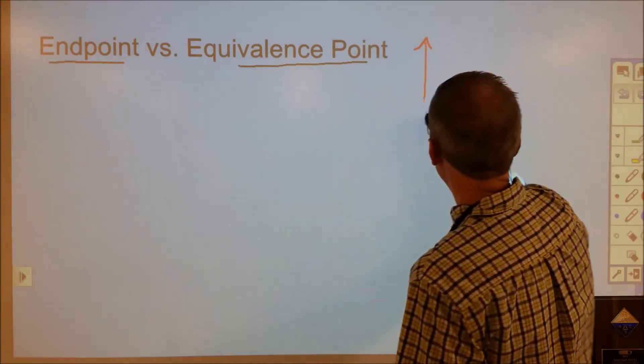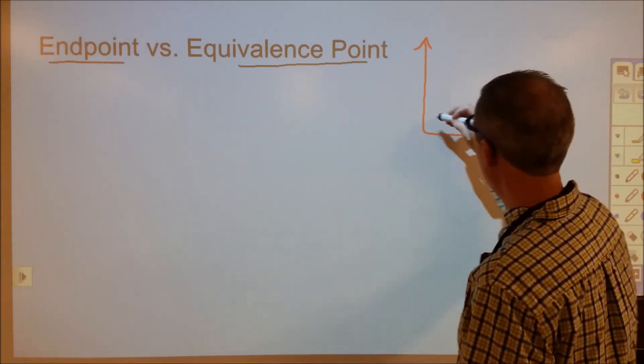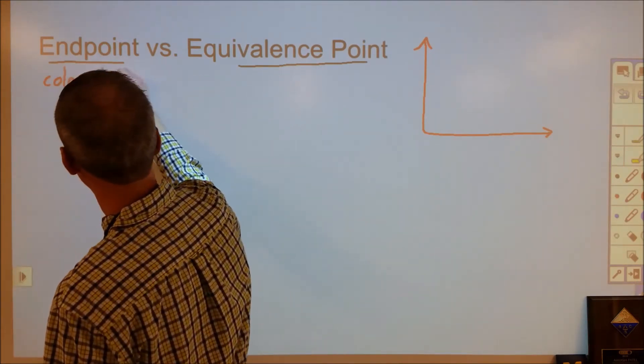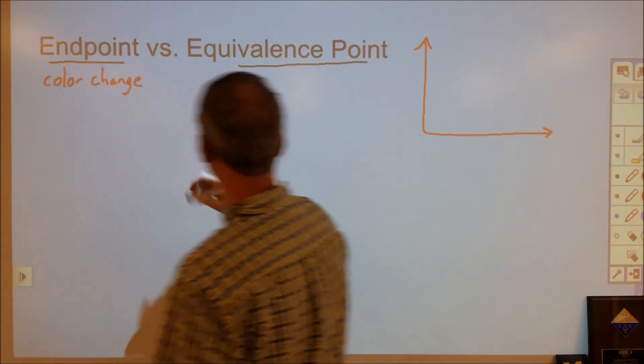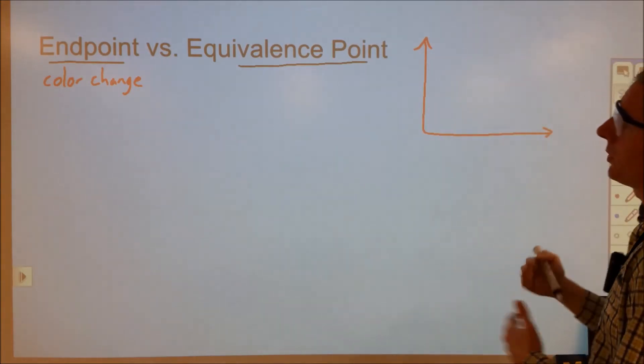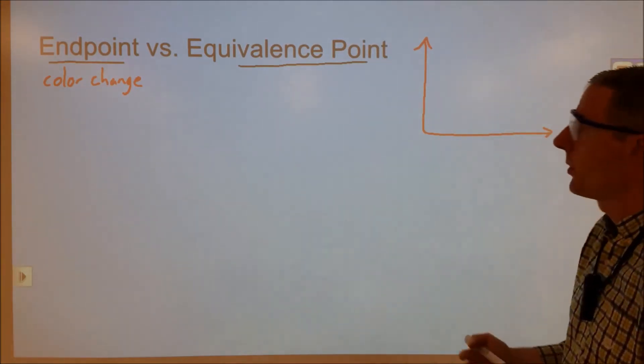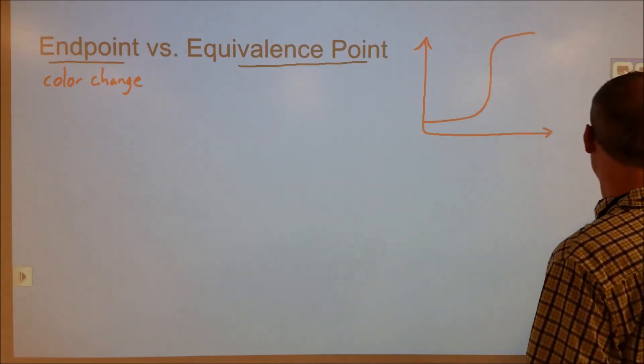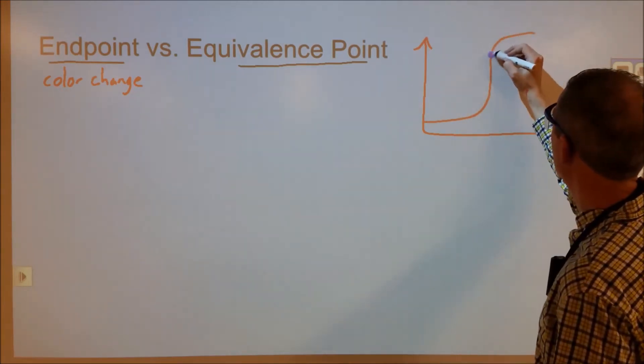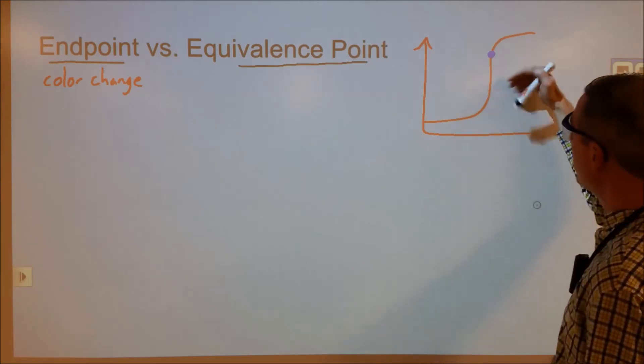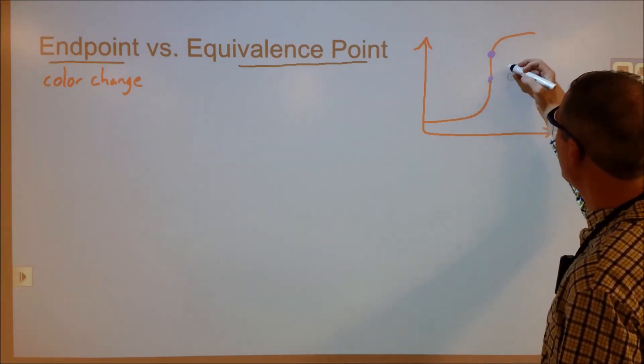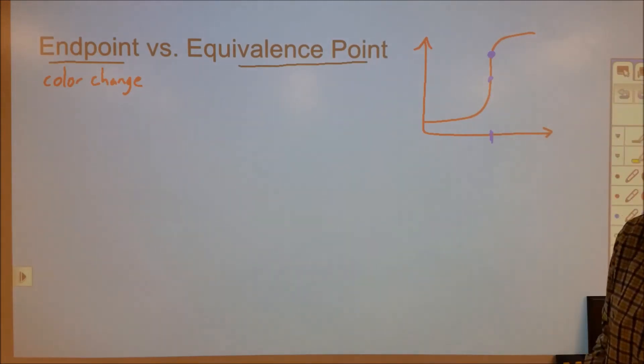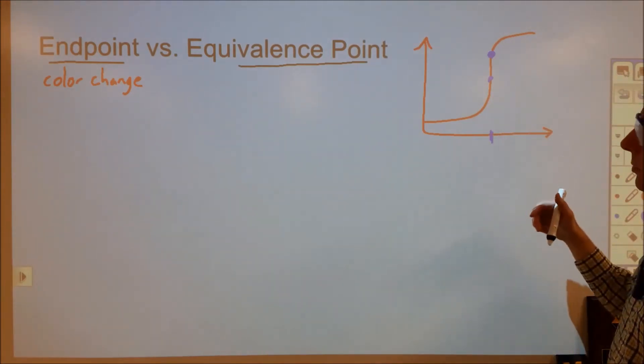So if we're looking at an acid-base titration curve, the endpoint is where the color change occurs. The equivalence point is where you have equivalent amounts of chemicals according to the stoichiometry. So in an acid-base titration curve, you might get a color change that occurs right here, and that is very close to the equivalence point which occurred here in the volume. So if you kind of trace that down, it's right there and right there. So maybe a drop or two past the equivalence point would be the endpoint.